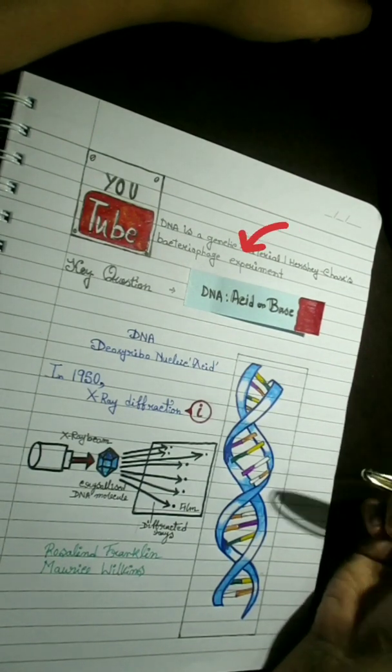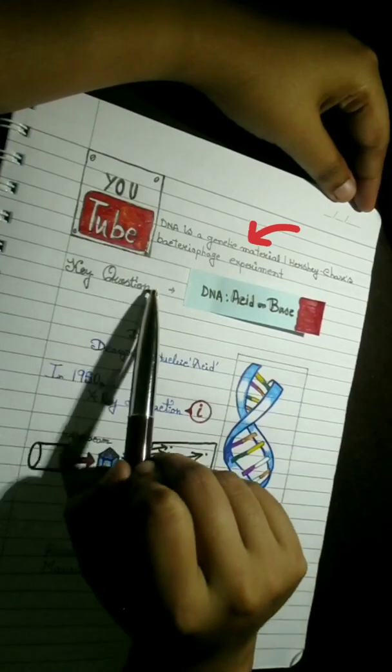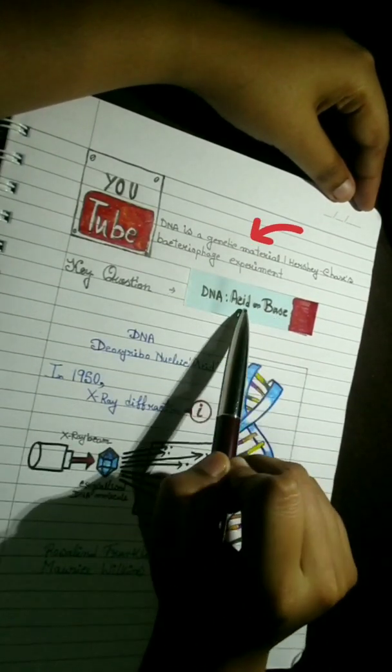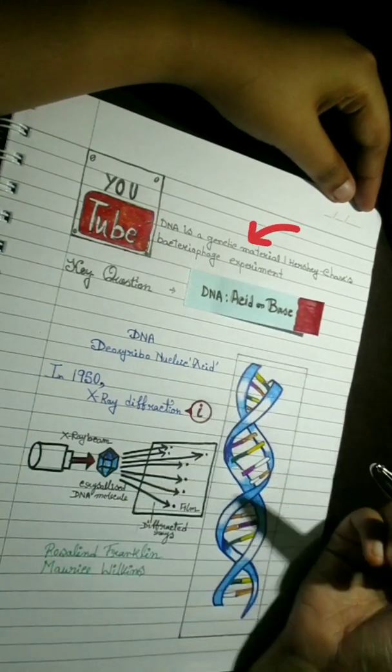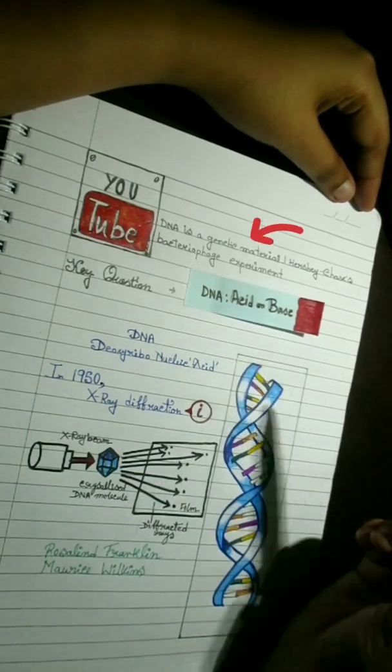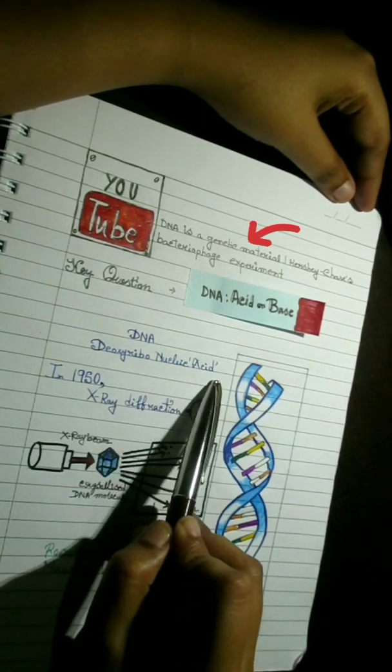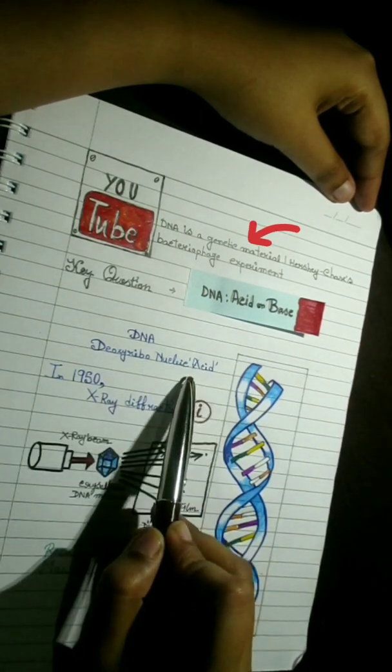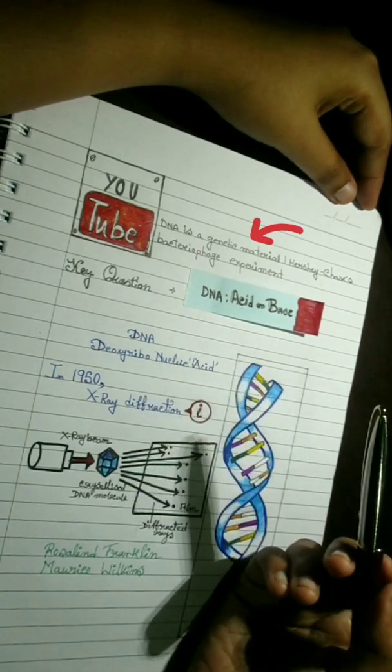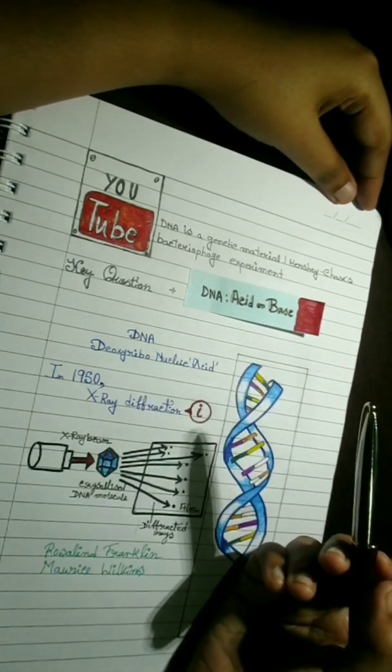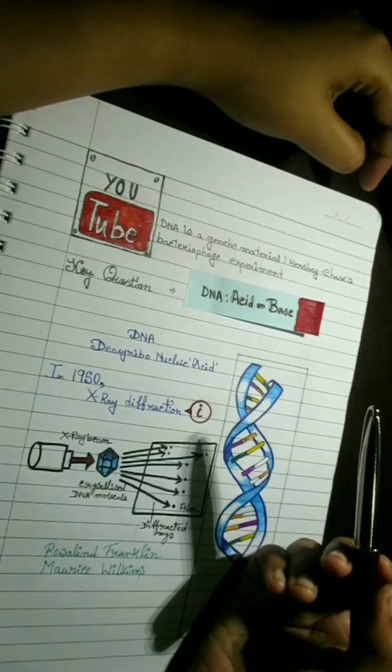Today's key question is, is DNA acid or base? You may find it very easy to answer according to its full form, deoxyribonucleic acid, but the answer requires more information. Better to say concepts regarding this answer, we need to know what is the molecular structure of DNA.